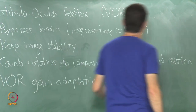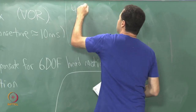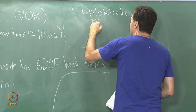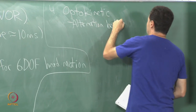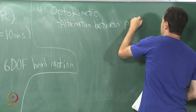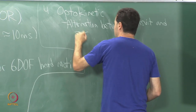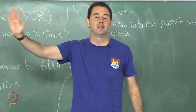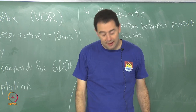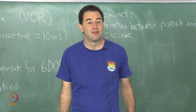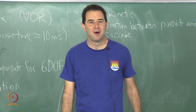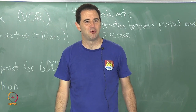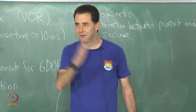Eye movement number 4 is optokinetic, which is an alternation between pursuit and saccade. This happens with a very fast-moving, rather large object that you want to track — you keep jumping from feature to feature on it. The most common example is standing on the ground and watching a train go by: your vision system tracks a feature on the train, then jumps to another, and another. I do not find it very comfortable but it is interesting to watch a fast-moving train when you are fairly close to it.